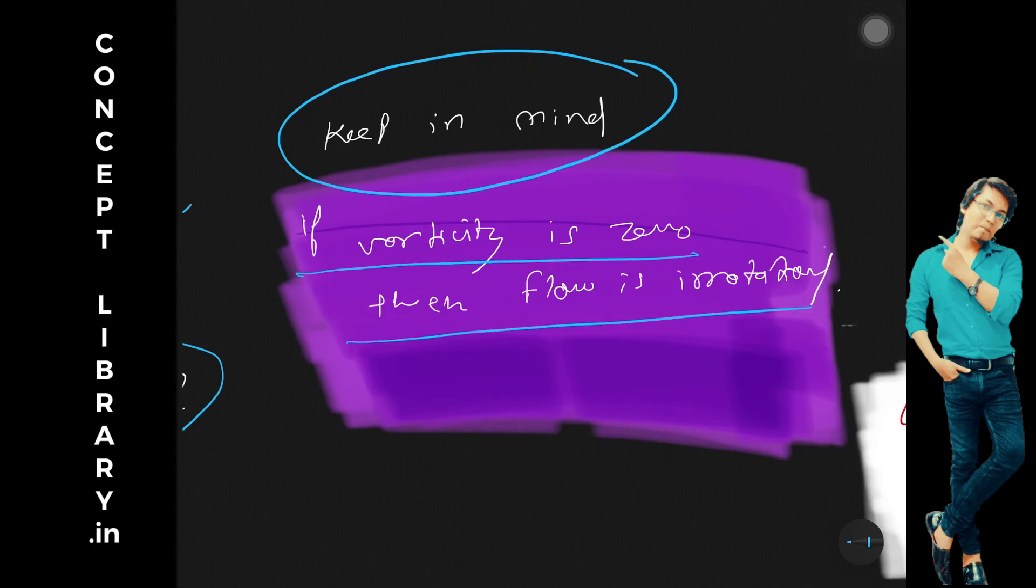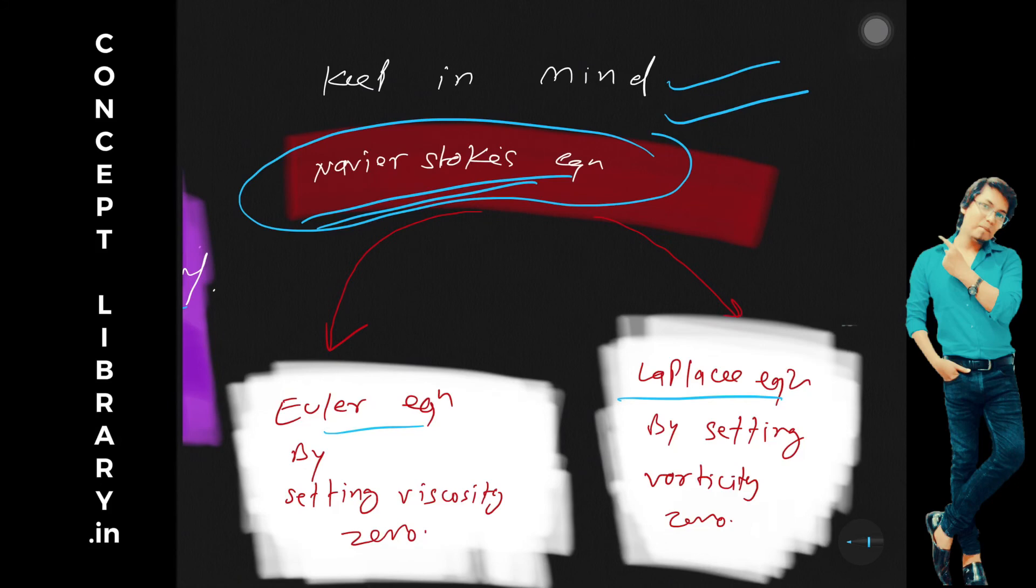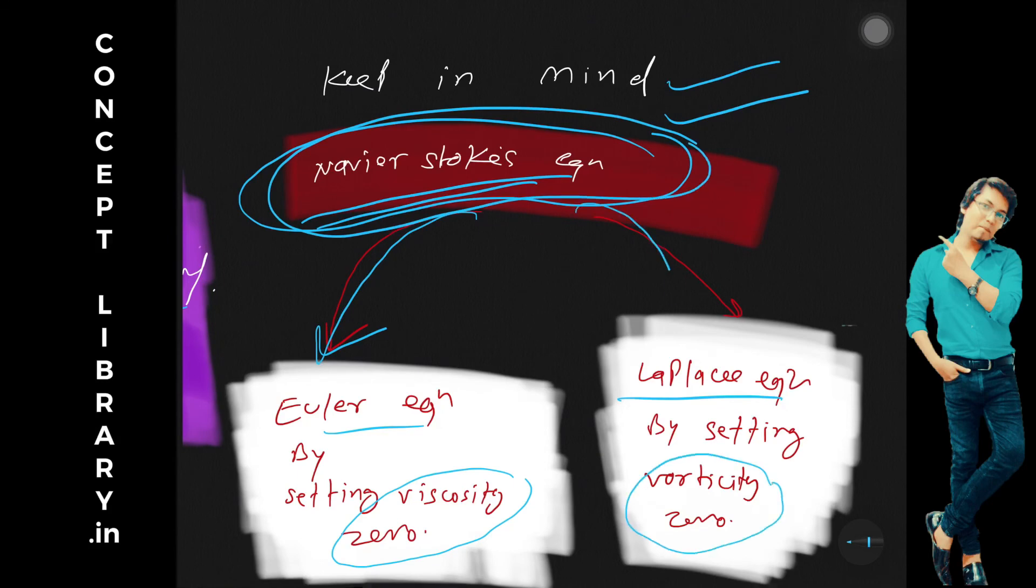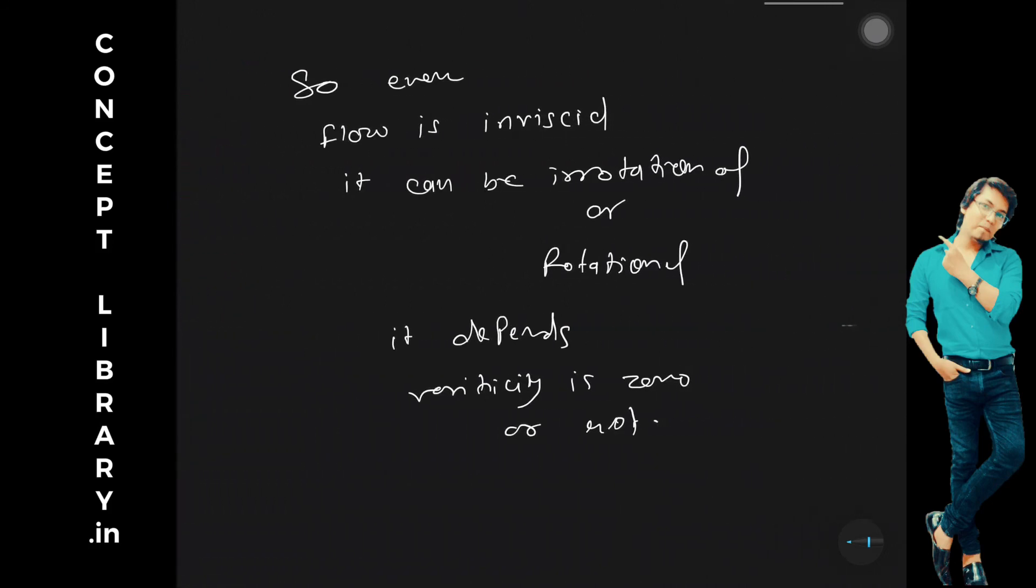And keep in mind one more thing: from Navier-Stokes equation we can get Euler equation and Laplace equation. In this equation, if you set viscosity as zero, you will be getting Laplace equation, right? So even flow is inviscid, it can be irrotational or rotational.